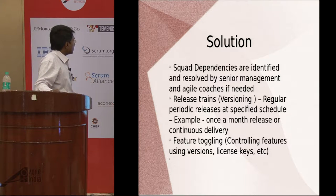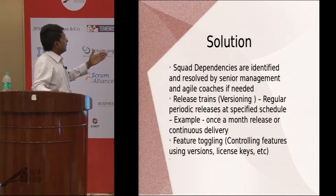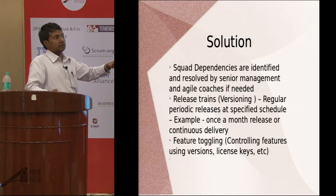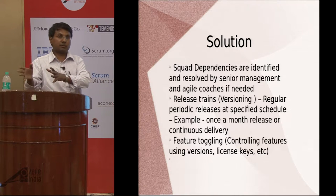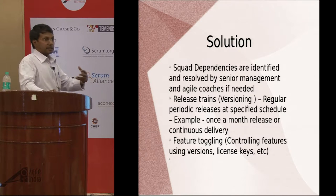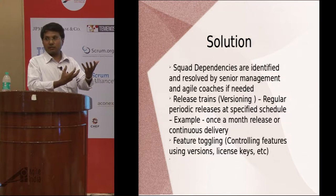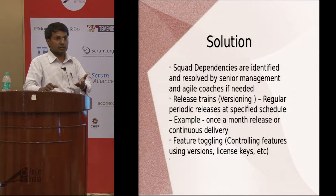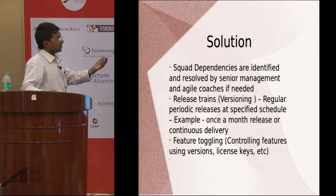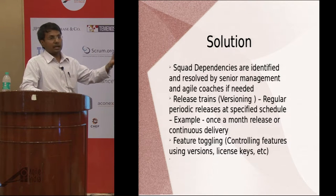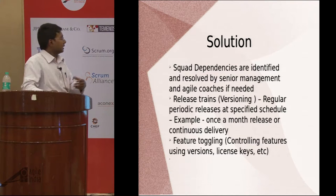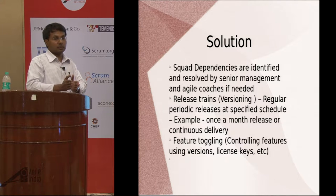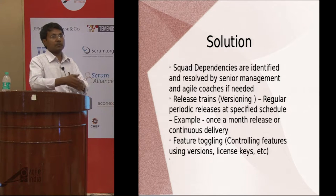Squad dependencies are identified and resolved by senior management and agile coaches if needed. Senior management makes everything transparent so the work of all squads is visible to every other squad. If there is a dependency between squads, it is identified and the responsible squad takes that as higher priority. The squads' work is controlled by both business objectives and the squad's own technical objectives — it should not be that the squad works on features nobody wants, while still being responsible for delivering business requirements.